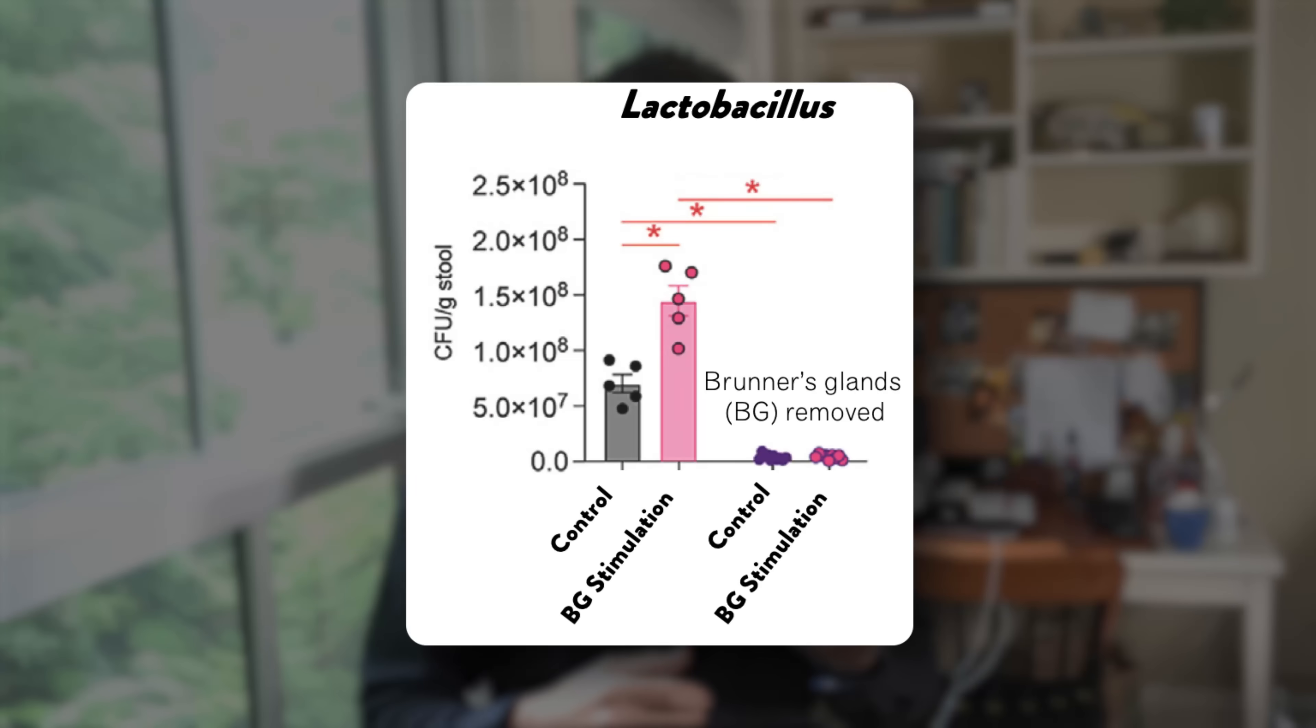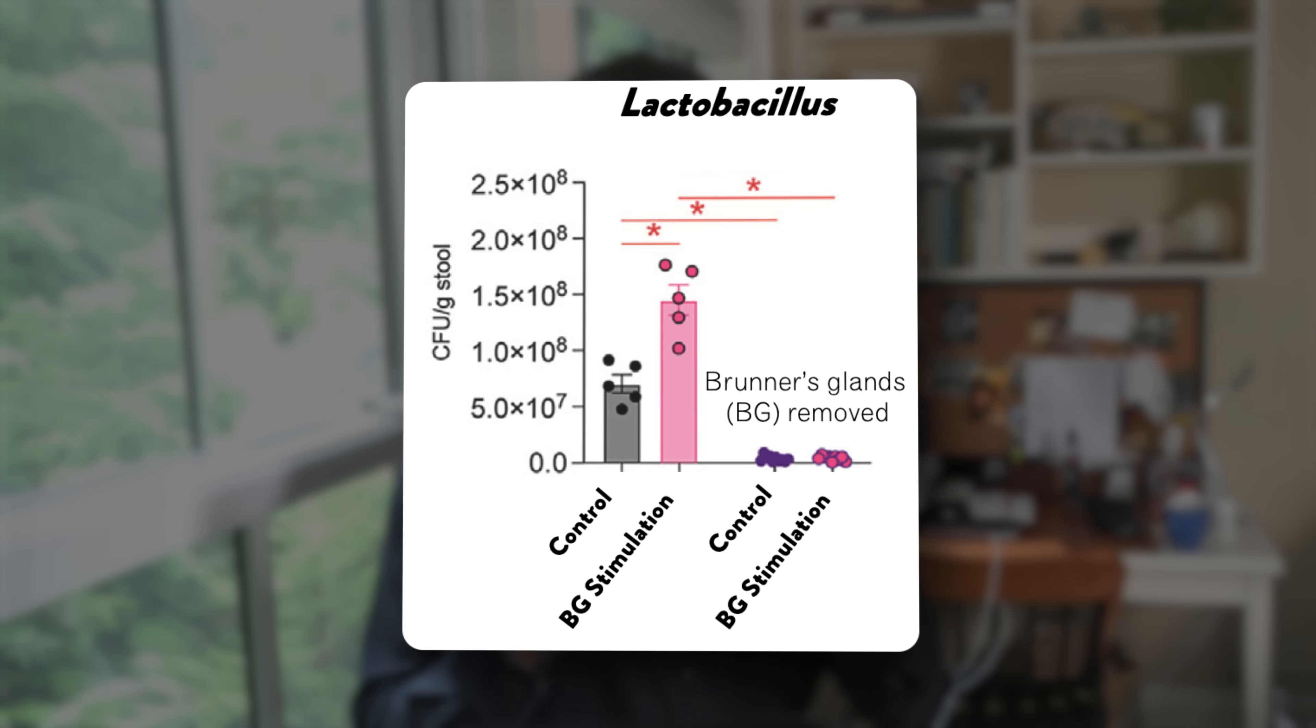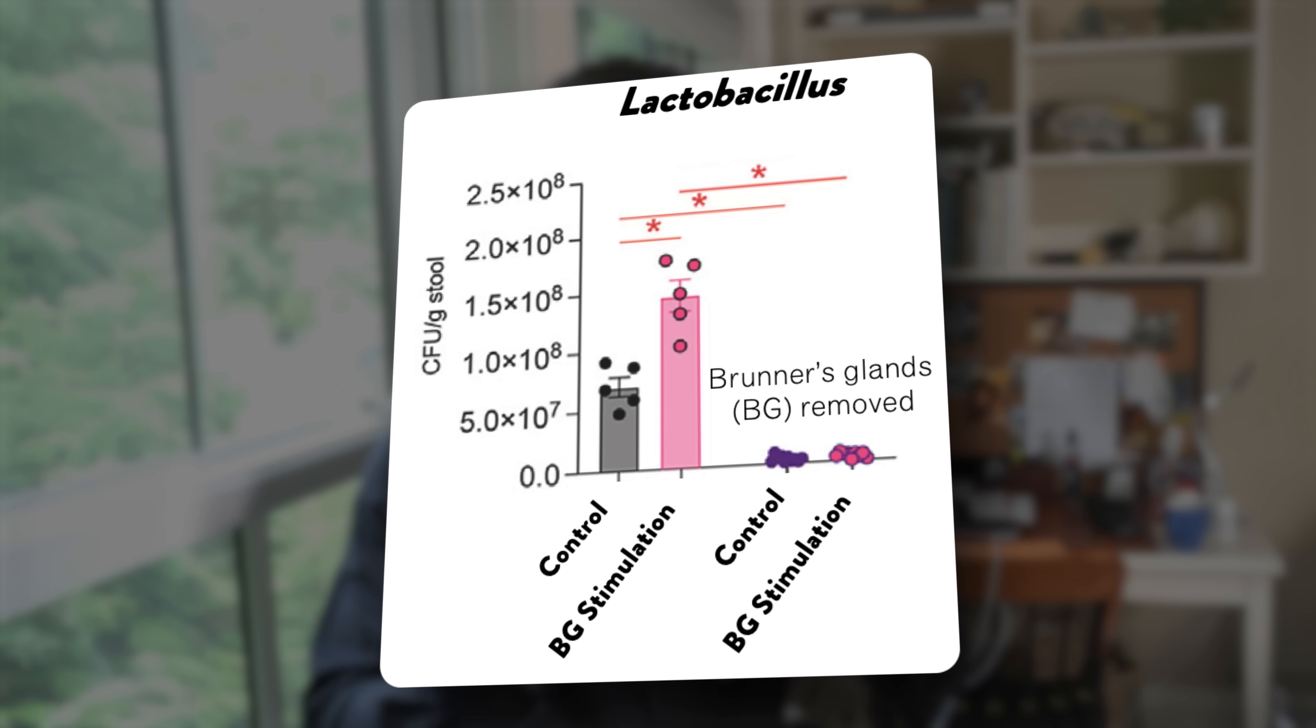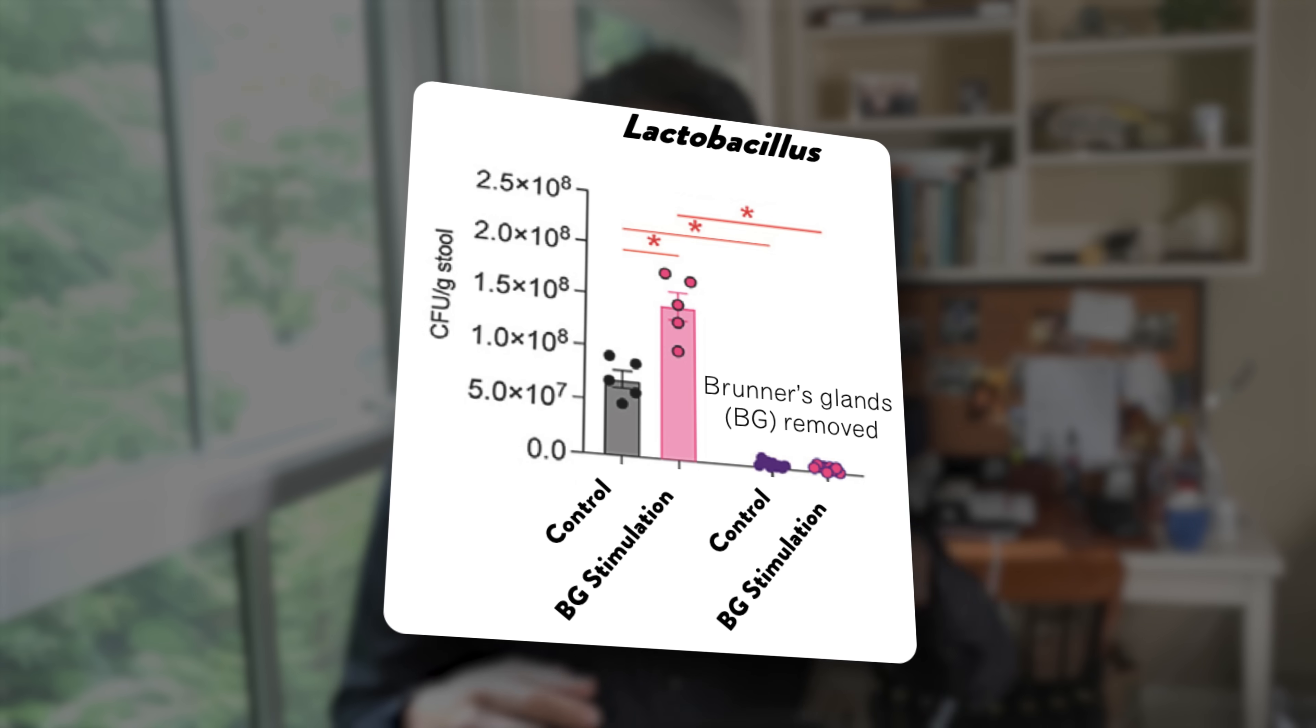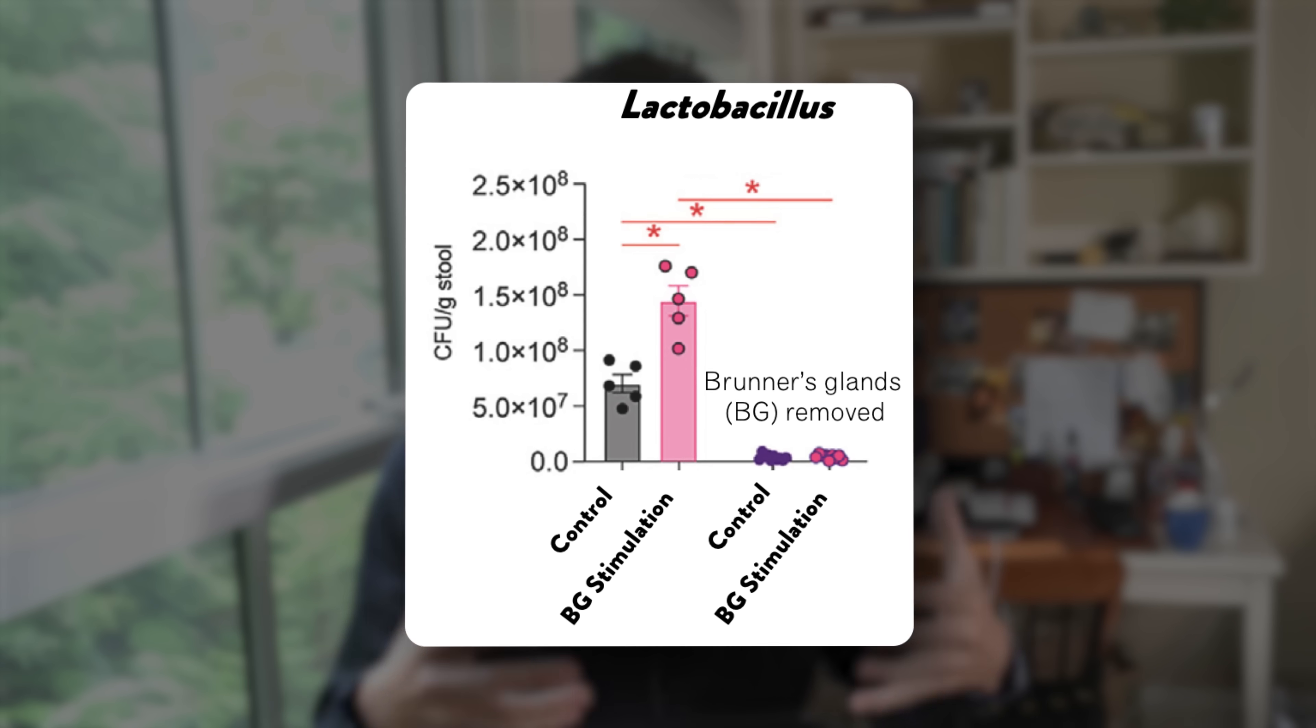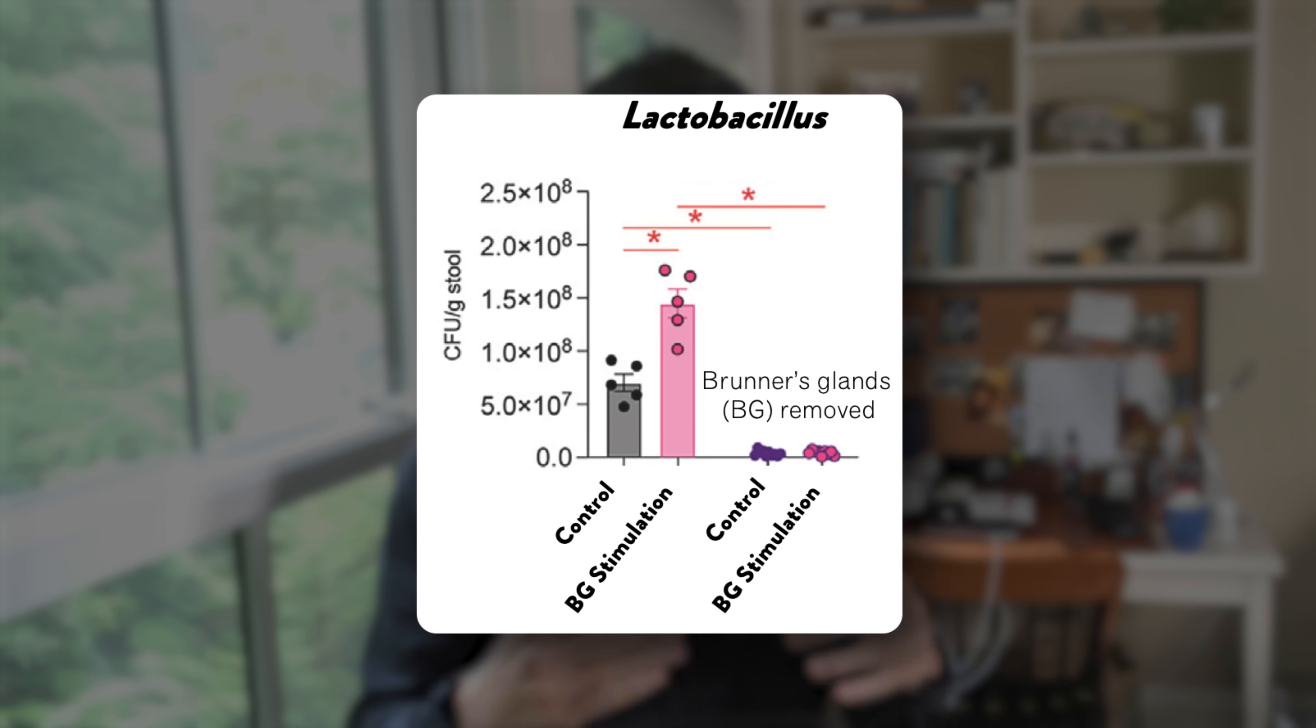Shown here, the researchers found that by stimulating mucin secreting Bruner's glands in mice, the Bruner's glands provided nourishment to Lactobacillus to promote their growth. However, surgical removal of these Bruner's glands negated this effect and depleted Lactobacillus levels. So this shows that mucin secreting Bruner's glands are important for promoting Lactobacillus growth.